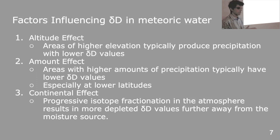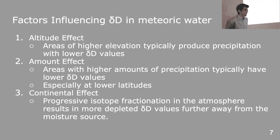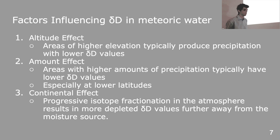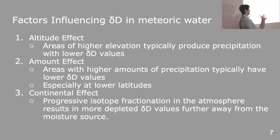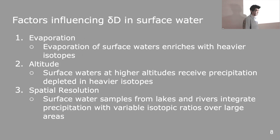We can start to characterize the different types of conditions that influence this decrease in deuterium. Typically we break it down into three main effects. First is the altitude effect, which describes the tendency for areas of higher elevation to produce precipitation with lower, more negative delta D values. The second is the amount effect, which describes the tendency for areas with higher amounts of precipitation to have lower delta D values — especially true at lower latitudes, so not quite as strong here in Oregon. Third, we have the continental effect, which describes the progressive isotope fractionation or depletion of deuterium in the atmosphere as a result of being further away from the moisture source, the ocean.